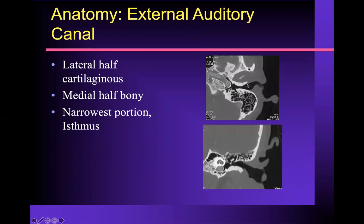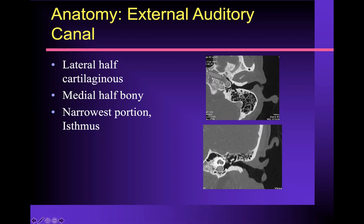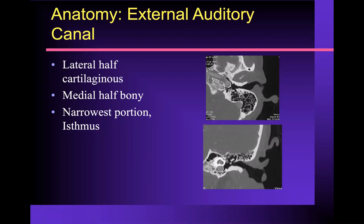The external auditory canal is cartilaginous in the outer half or two-thirds, and the inner third or half is bony. There is a natural narrowing of the bony EAC called the isthmus, which subdivides it into medial and lateral components — the isthmus is the narrowest portion. The EAC is lined by squamous epithelium, and there are specialized ceruminous glands on the surface that form cerumen or wax. When thinking about differential diagnosis for tumors here, remember this is not a mucosal surface — it's skin. So lesions involving the EAC include squamous cell cancer, melanoma, basal cell cancer, tumors from the ceruminous glands such as adenoma or adenocarcinoma, and bony lesions from the bony EAC.